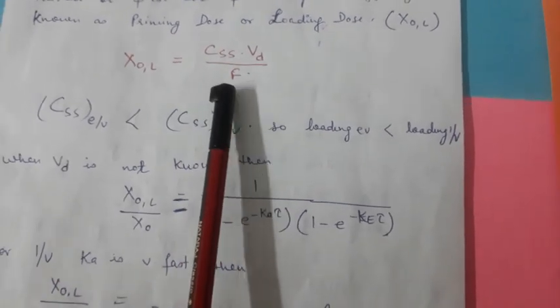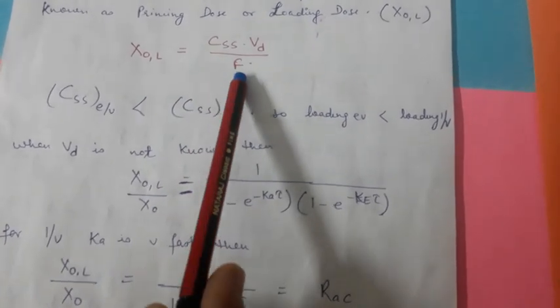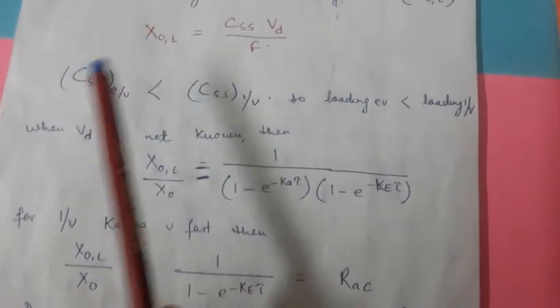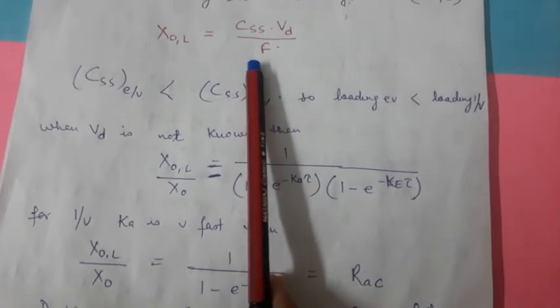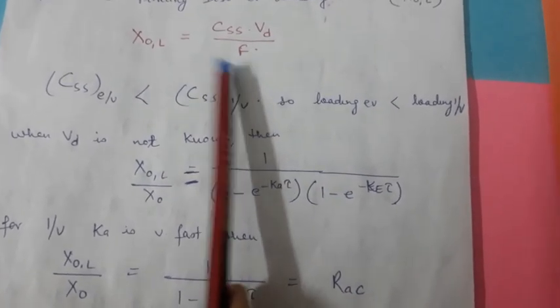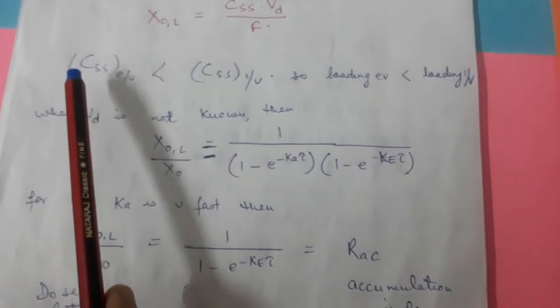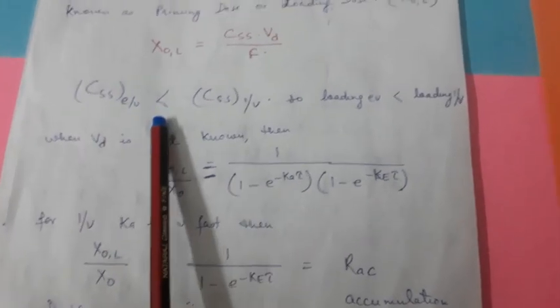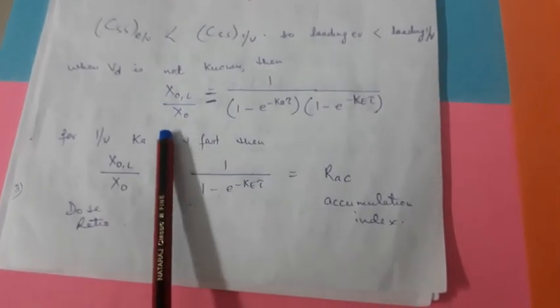IV ke case mein hum f ko use nahi karte, aur extravascular mein lete hain. Iska reason: IV ke case mein drug 100% absorbed ho jaati hai, to f ki koi value hi nahi hai. Par extravascular ke case mein drug distribution mein time leti hai, to f consider kiya jayega. F kya hai - it is the fraction of the drug that is absorbed. Ismein 100% absorption nahi hota, IV ki case mein hota hai. Toh jo steady state concentration hogi extravascular mein, woh comparatively kam hogi in comparison to IV.